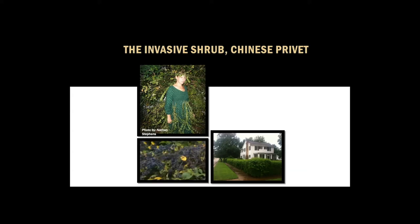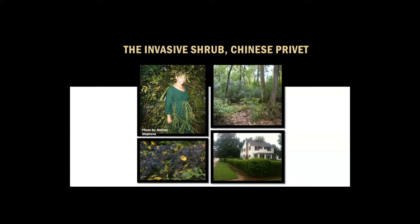It reproduces vegetatively through runners or root induction on broken limbs, and also reproduces sexually via fruit. The single-seeded drupes are highly viable, and a single privet plant can produce thousands of germinating offspring per year. These fruits get dispersed into forests where they occupy the understory, ultimately resulting in a shrub layer so dense that it prevents any sort of native regeneration.